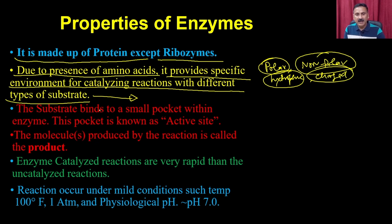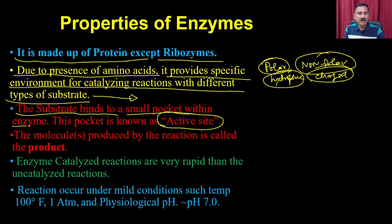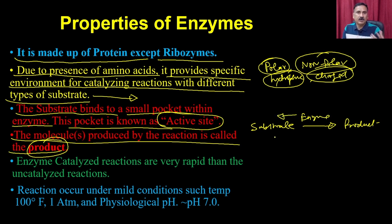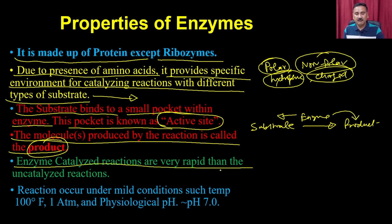Enzymes which are for glucose will not bind fructose; the enzyme which is for DNA will not bind RNA. Enzymes have a small area where they actually bind the substrate - this area is called the active site. The substrate binds to a small pocket within the enzyme, and this pocket is known as the active site. The molecule produced by the enzymatic reaction is called the product - the substrate is converted into the product, and the enzyme does the rearrangements, bond breaking, and bond forming to produce the products.